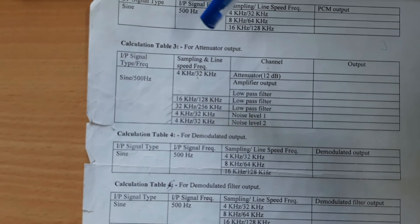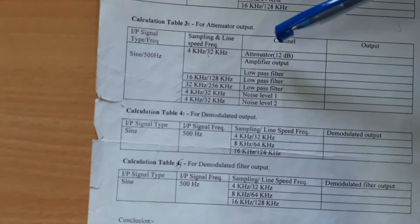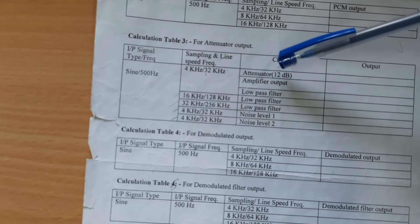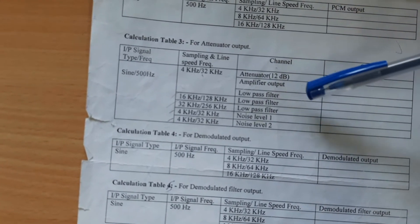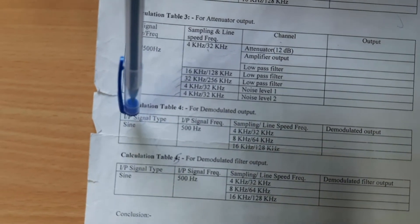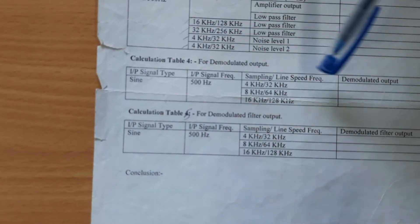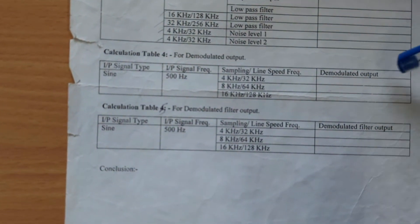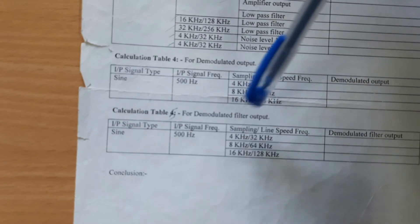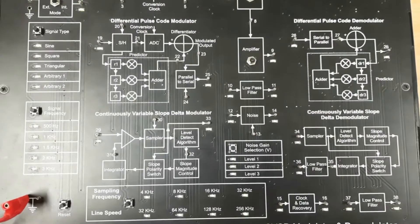Draw and observe the waveforms obtained for different channels. For the low-pass filter and noise outputs, draw the amplifier output and low-pass filter output for different frequencies. For the demodulator section output, record the signal type, frequency, sampling frequency, and draw the output waveform. Similarly, for the demodulator filter output, record signal type, frequency, sampling frequency, and draw the output waveform.